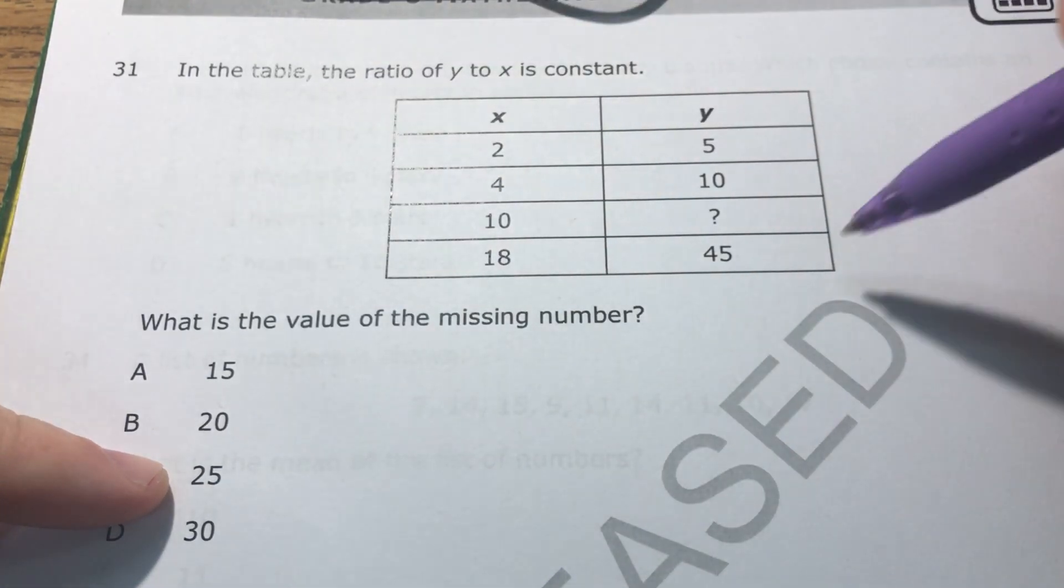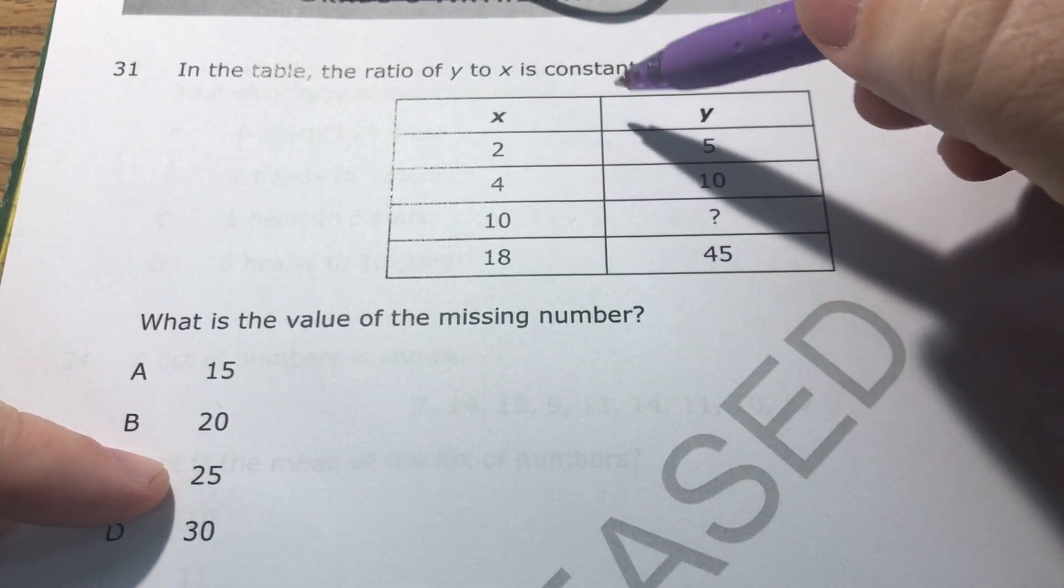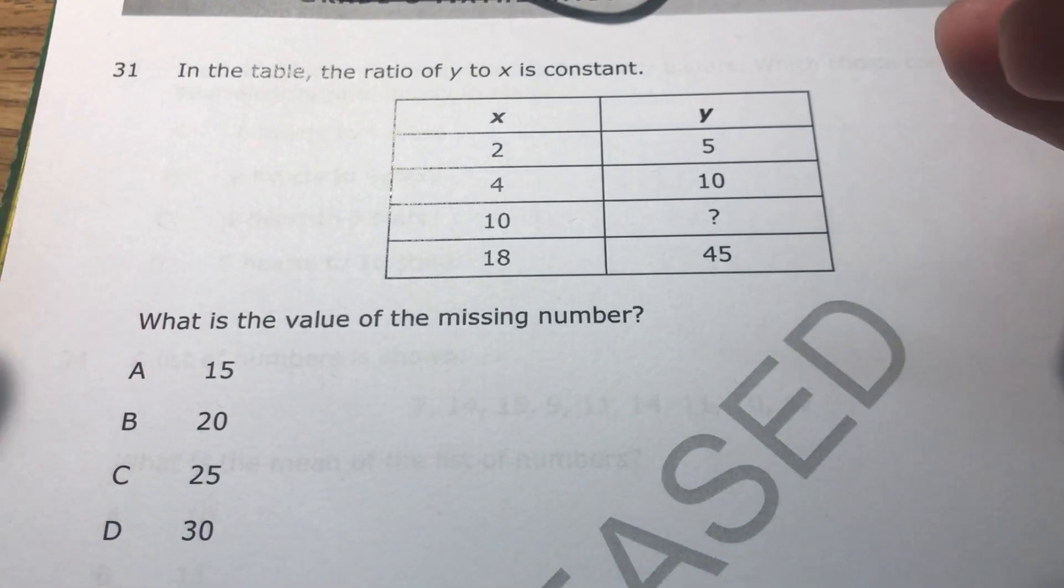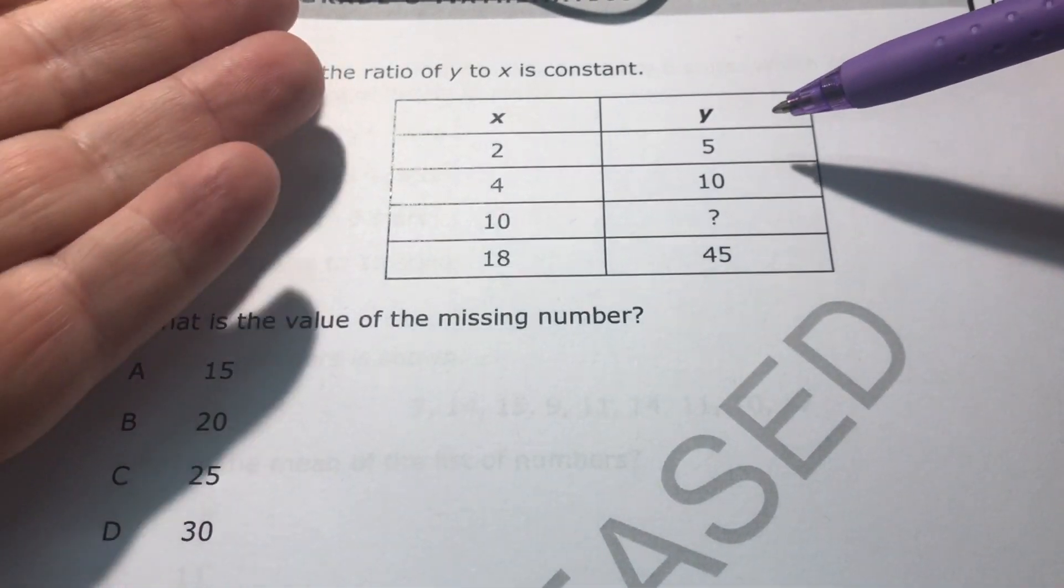Guys and girls, make sure you understand that these relationships right here are consistent. That's why it says constant. The relationship is constant. When it says the ratio is constant, it's saying that the relationship does not change. It's not like two to five, four to one hundred. It's constant.